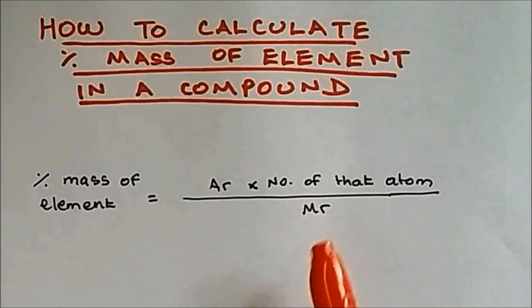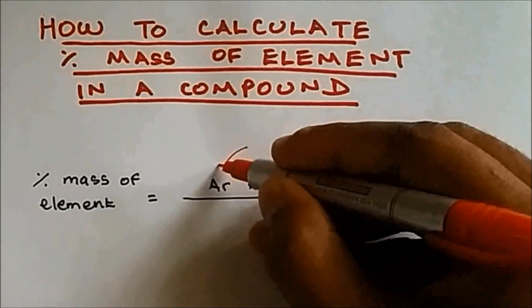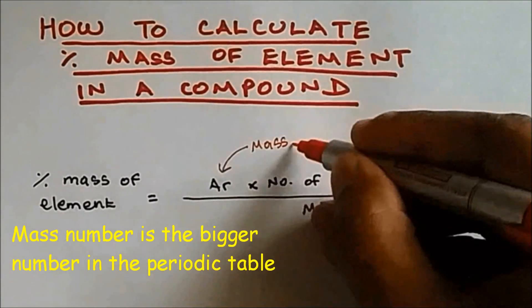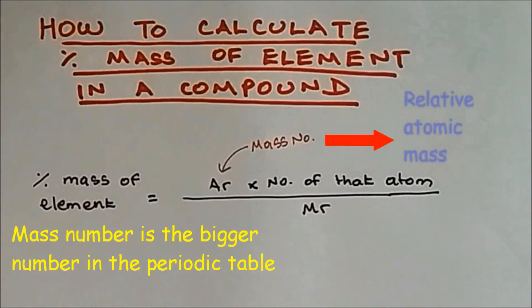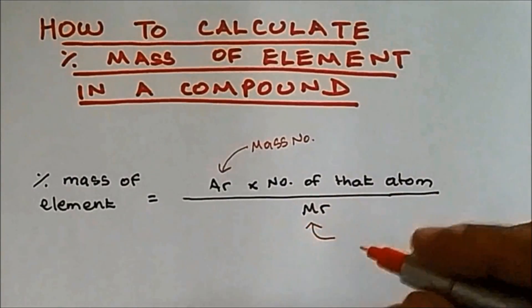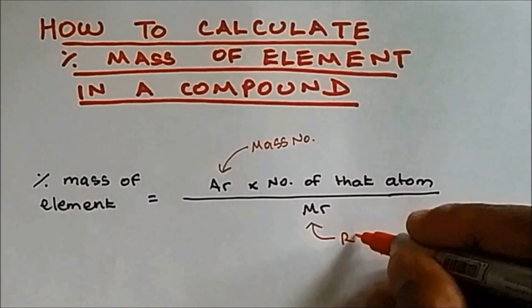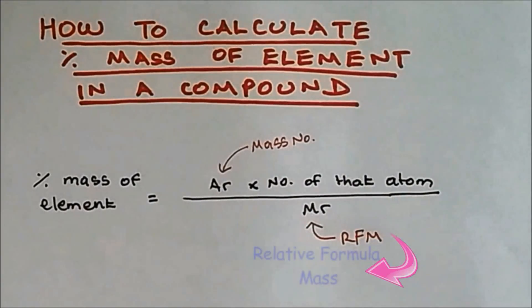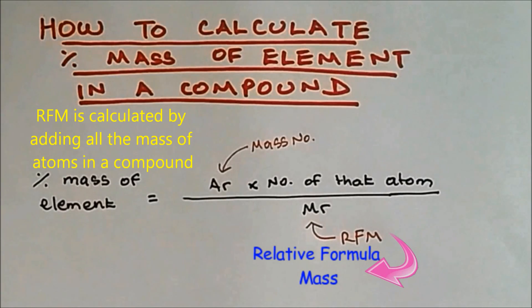You divide it by the MR. What's AR? AR is the mass number. AR stands for relative atomic mass. MR stands for relative formula mass.